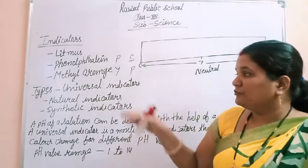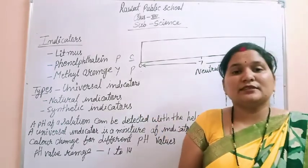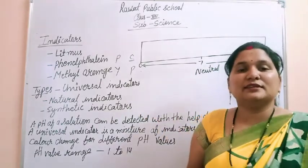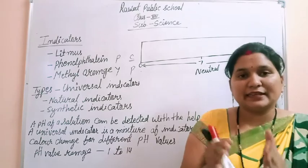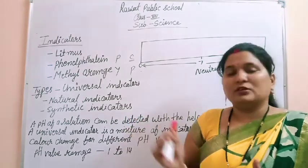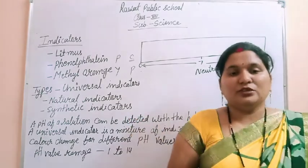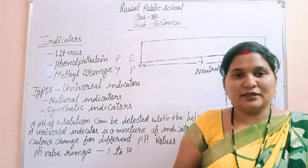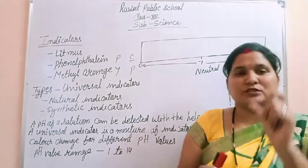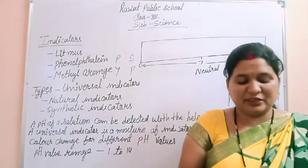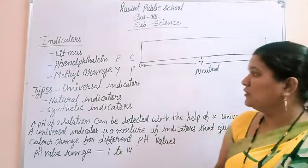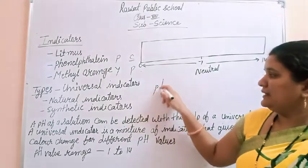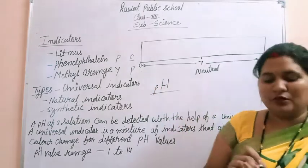The types of indicators are: first, universal indicators; second, natural indicators; and third, synthetic indicators. Today let's talk about universal indicators. Here there is an important term called pH value — written as small 'p' and capital 'H'.